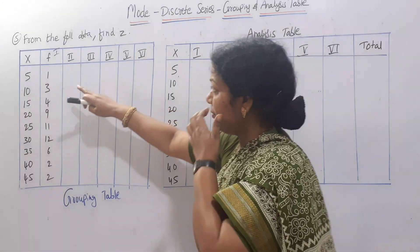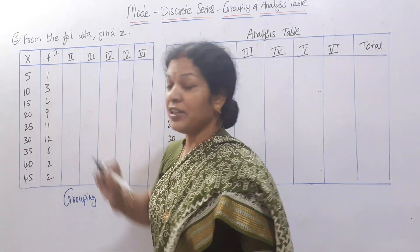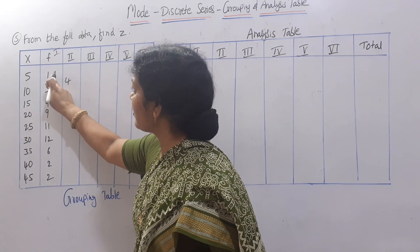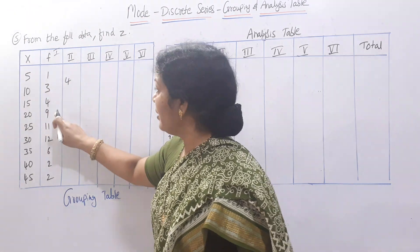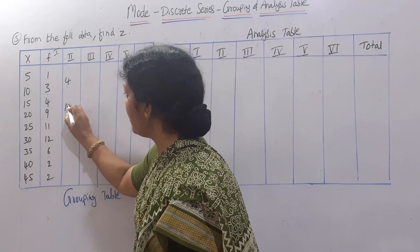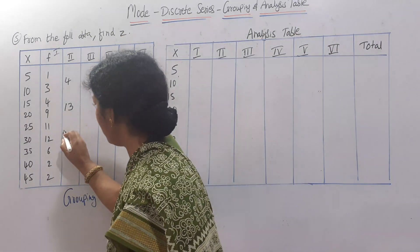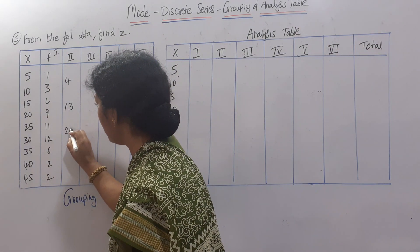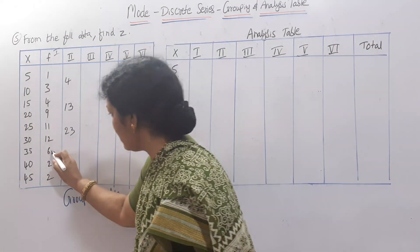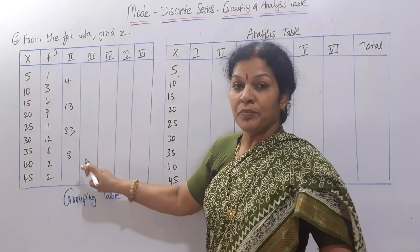For column 2, we add frequencies two-by-two: 1 plus 3 equals 4, and we write 4 in the center between those two. Then 4 plus 9 gives 13 — written in the center. Then 11 plus 12 gives 23, written in the center. And 6 plus 2 gives 8.